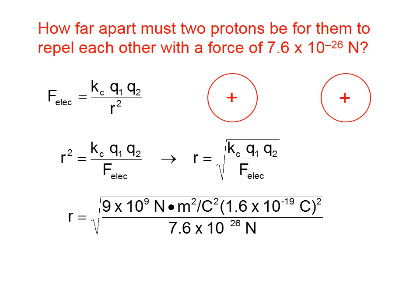And the electric force, 7.6 times 10 to the negative 26 Newtons. We need to make sure when we type this into our calculator that we take the square root of this entire quantity. That gives us 0.055 meters, which is 5.5 centimeters. So when two protons are 5.5 centimeters apart, they repel each other with a force of 7.6 times 10 to the negative 26 Newtons.